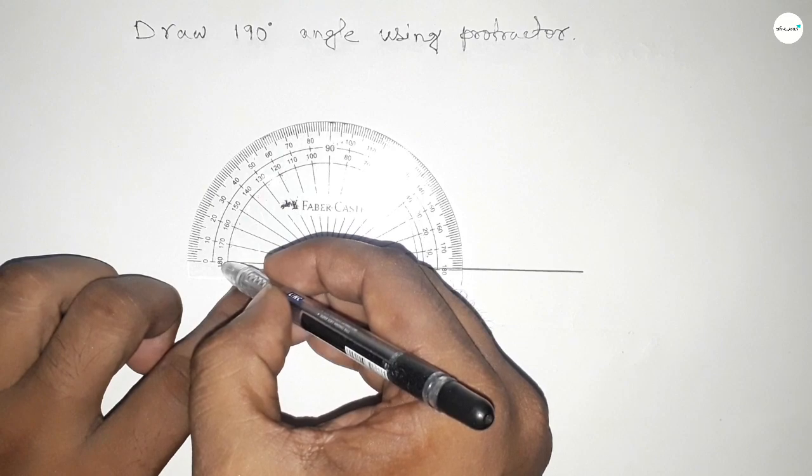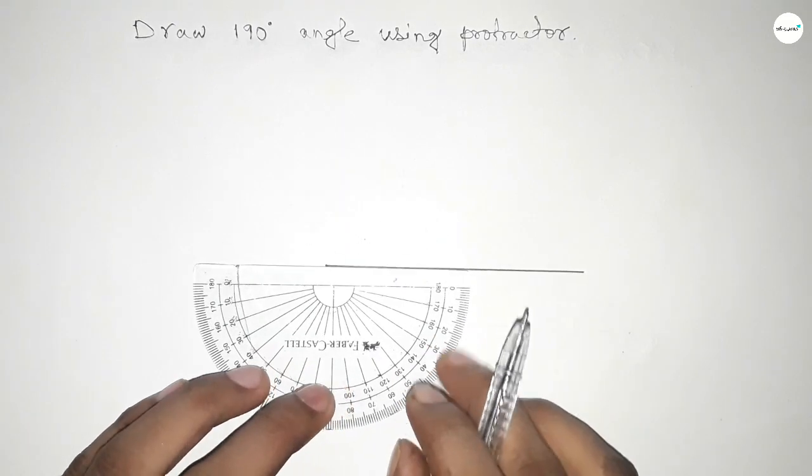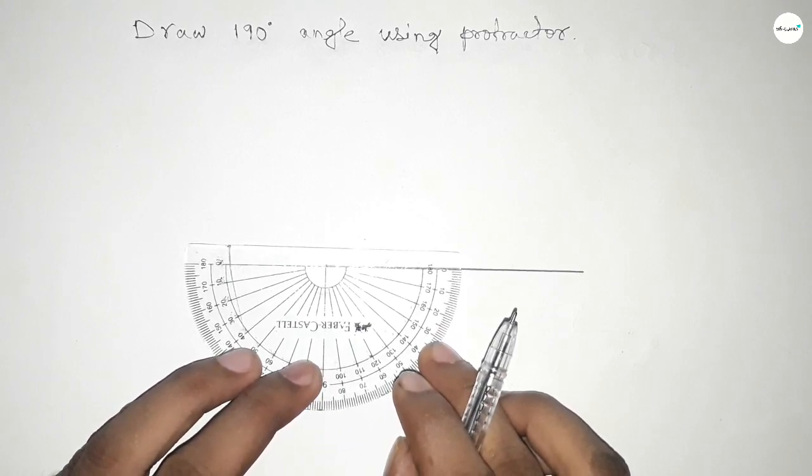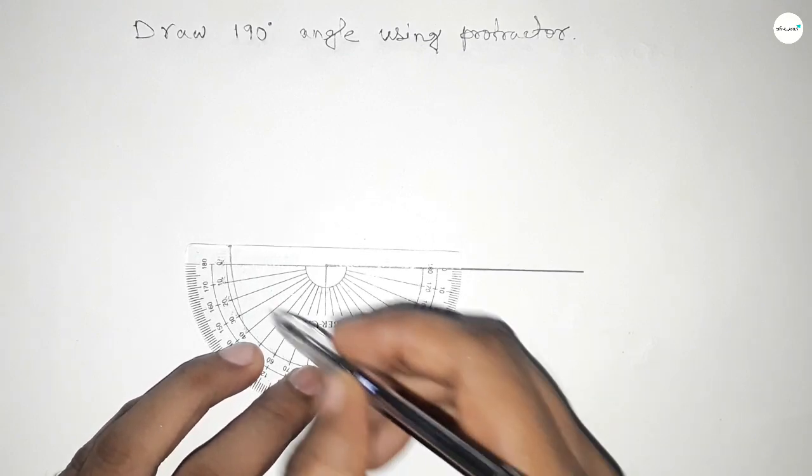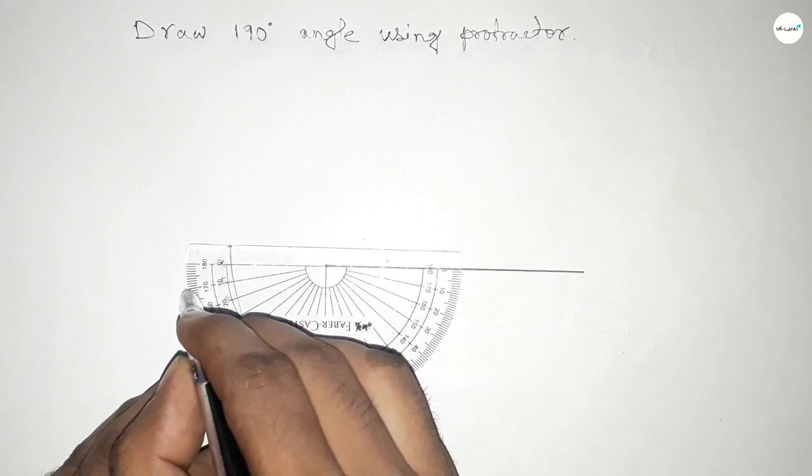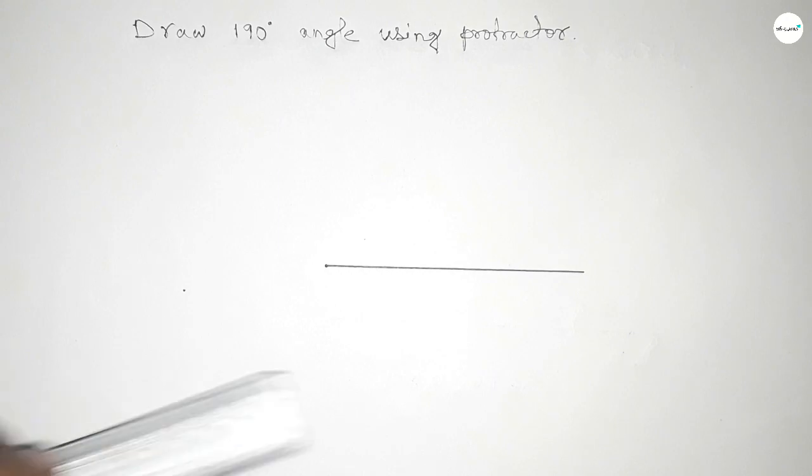10 degree extra with 180. So we have to put the protractor on the line by this way and add extra 10 degree. So this is 0 and 10, so up to this is 190 degree angle.